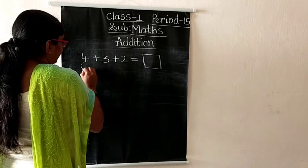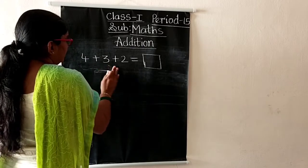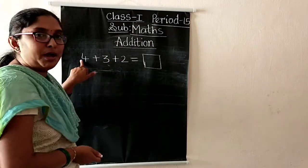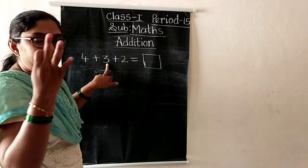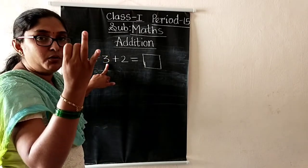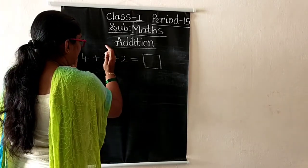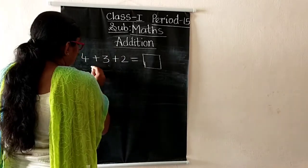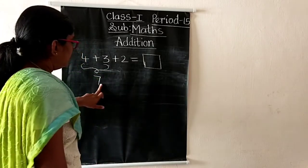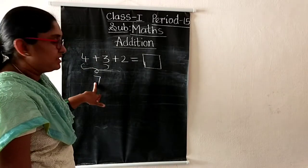So here, what is the first number children? Four. So take four in the mind, take three fingers. Four after: five, six, seven. So now we completed the addition of these two numbers. The answer is seven. If we add these two numbers we got seven.